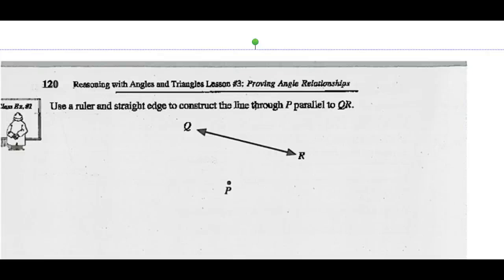Step one: let's follow along and do exactly what it says. We want to mark a point on the first line anywhere we like. I'm going to mark it right here and call this point M. I'm now going to draw a line through M and P — a second line through M and P.